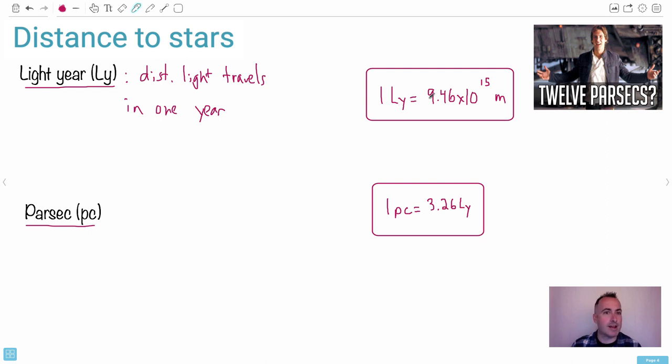We have one light year is 9.46 times 10 to the 15 meters. You don't have to memorize this. This is on your data booklet. So one light year is 9.46 times 10 to the 15 meters.